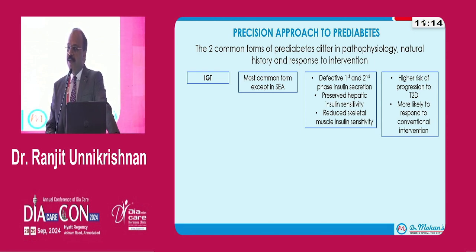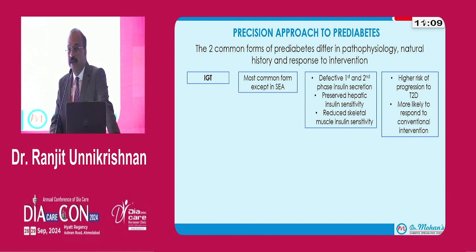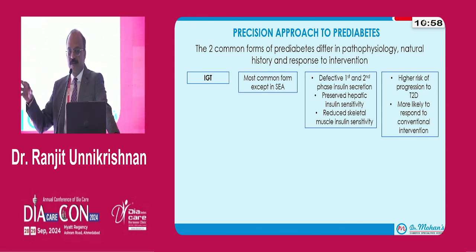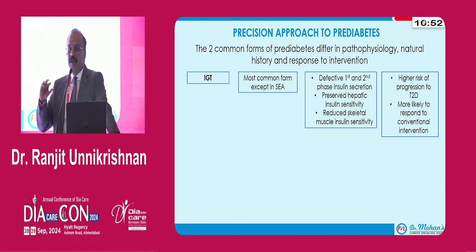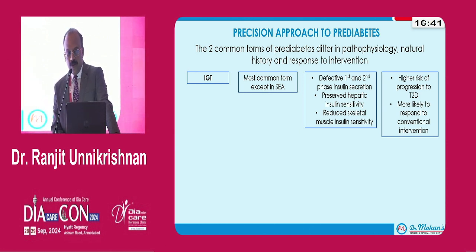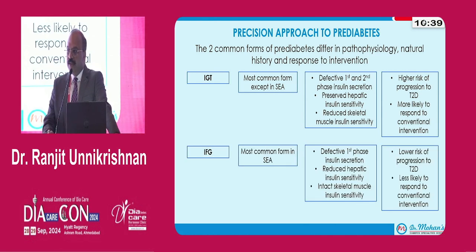Impaired glucose tolerance is the most common form of pre-diabetes everywhere in the world except in our part of the world in Southeast Asia. IGT is characterized by a reduction in insulin sensitivity in the skeletal muscle; hepatic insulin sensitivity is normal or only mildly impaired, and both the first and second phase insulin secretion are impaired. It has a higher risk of progression to type 2 diabetes, and all the interventions felt to be effective in pre-diabetes — diet, exercise, metformin — have mostly been tested in IGT individuals.